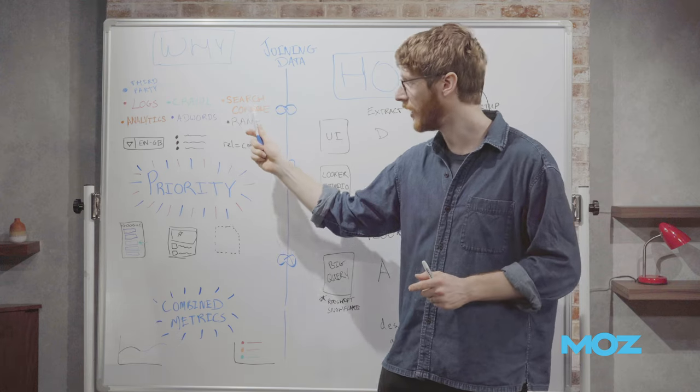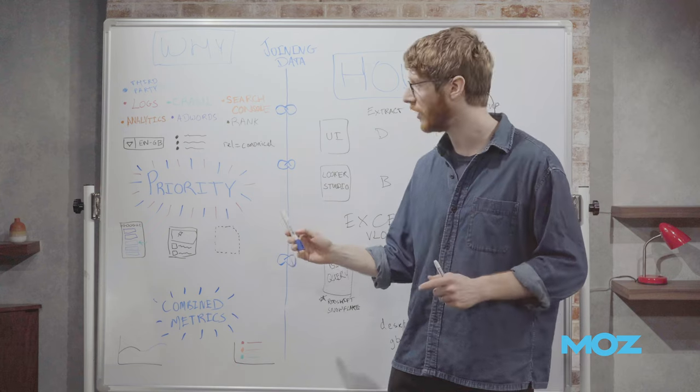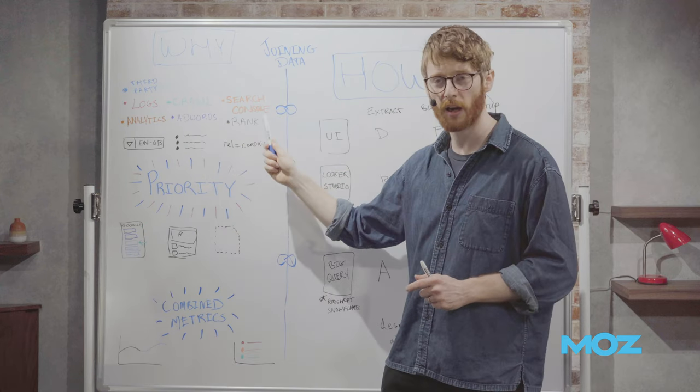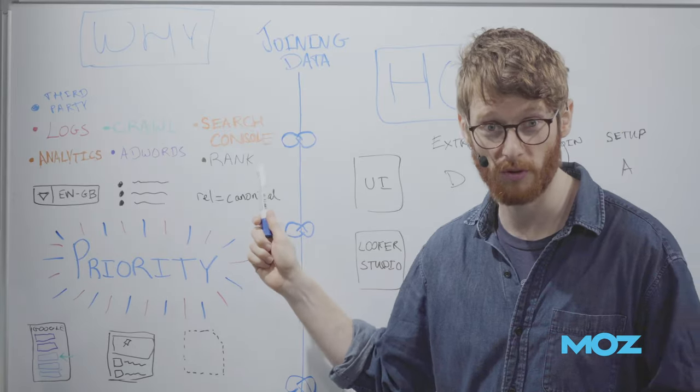For those ones that are really important, we can run the search console indexation API, and we can override these ones, and we can end up with this combined number of indexation that is far more accurate than any of these could do individually, unless we pay to check every single page every single time we want to know this, which we could also do. We could just throw money at the problem.